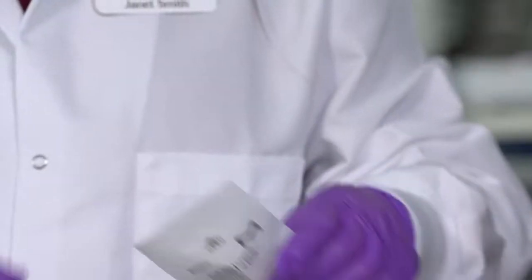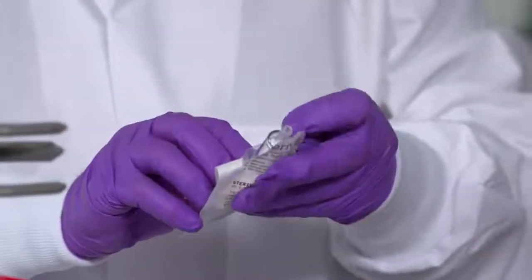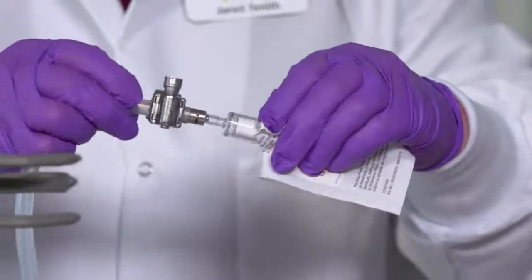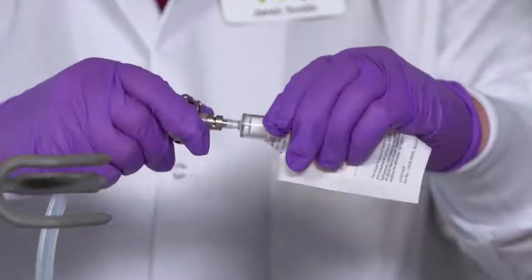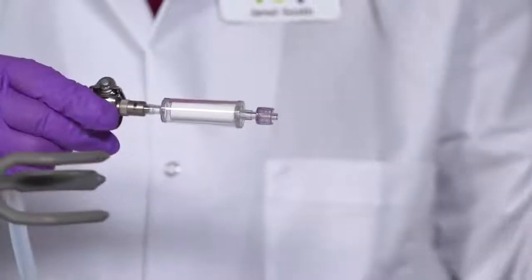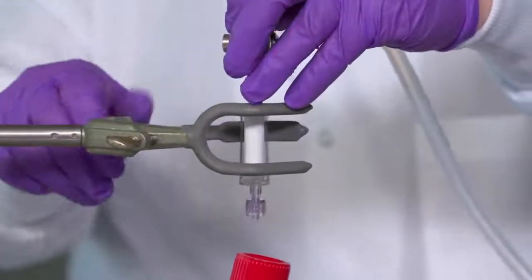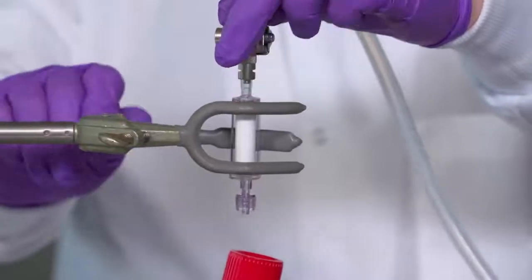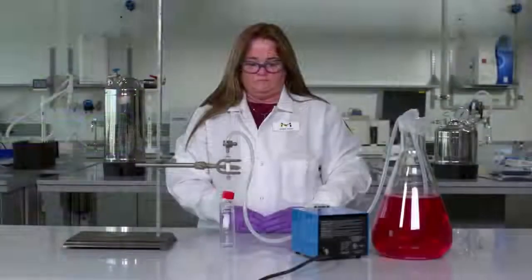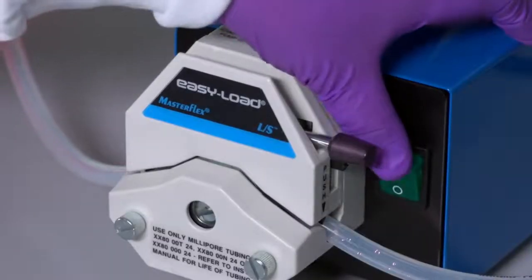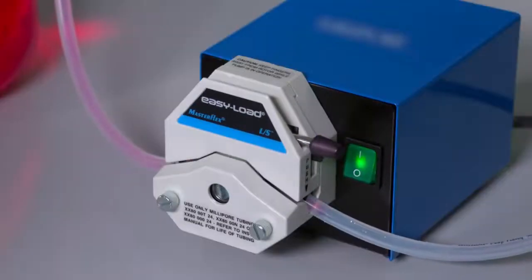Peel open the pouch containing the Sterivex filter unit using aseptic technique. Attach the lure lock end of the hose barbed lure lock adapter to the inlet of the filter unit and withdraw it from the pouch. If desired, connect the unit to a ring stand and place a sterile collection flask under it. Turn on the pump. Start and stop as needed using the pump controls.